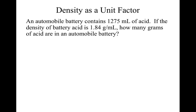Density is a unit factor. How could we use this to set up a conversion? An automobile battery contains 1275 mL of acid. If the density of battery acid is 1.84 g/mL, how many grams of acid are in an automobile battery? How many grams of acid? Grams is my answer. Now I want to write something on the left-hand side to start with. The question is, what do I start with? I would make the argument that we should start with the grams per milliliter one, because that has the unit that I want in it.